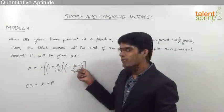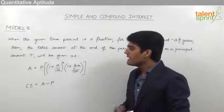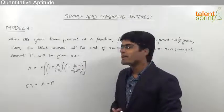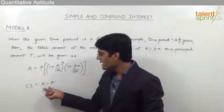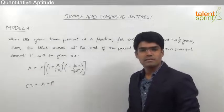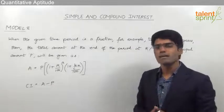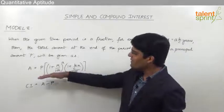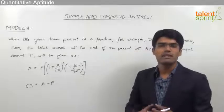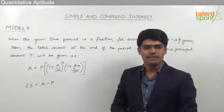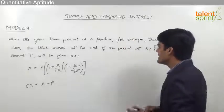If the compound interest is required, it can be calculated as the total amount minus the principal. So if compound interest is to be calculated, we first find out the amount and then subtract the principal to get the required answer.